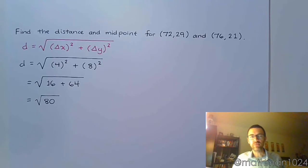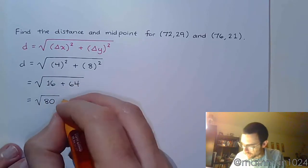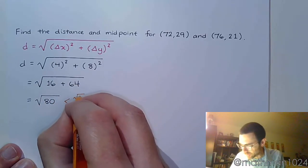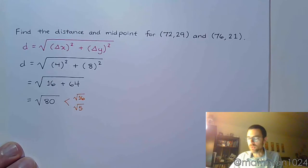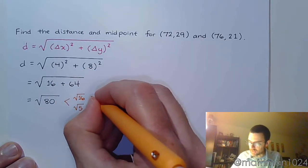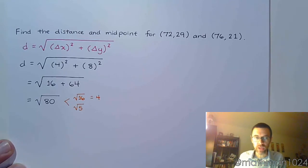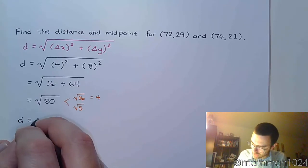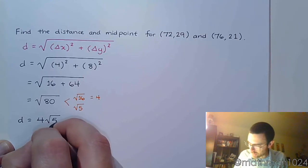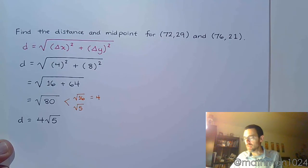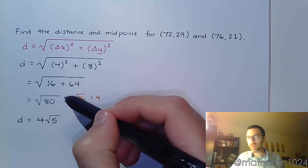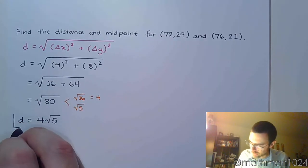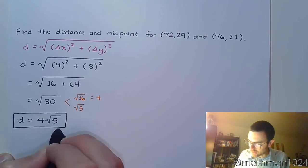We want to simplify the square root of 80. The winning combination is to break this down as 16 times 5, both inside the square root. The square root of 16 simplifies to give us 4, so the distance is 4 times the square root of 5. Make sure that you do simplify the radical, because we always simplify our answers.